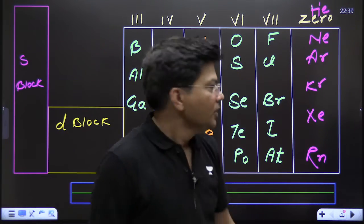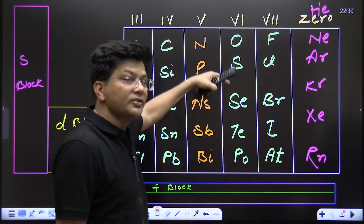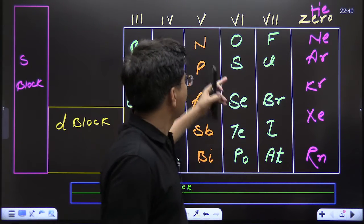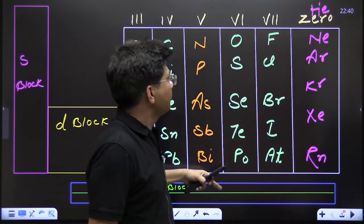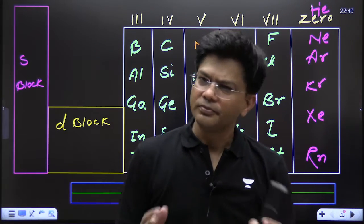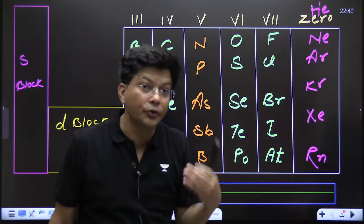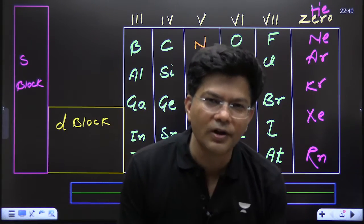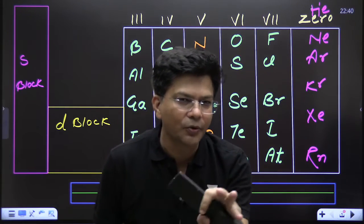Oxygen, sulfur, selenium, tellurium, and polonium — group 16, six electrons in the outermost orbit. Fluorine, chlorine, bromine, iodine, astatine — halogens, seven electrons in the outermost orbit. Mnemonic: 'First class bro and I.' And the zero group: helium, neon, argon, krypton, xenon, radon — they generally don't react.